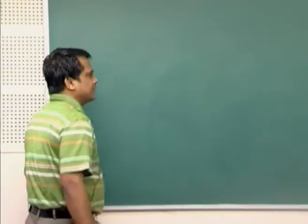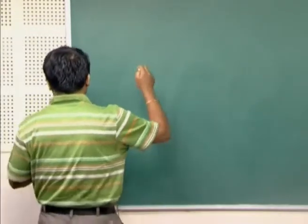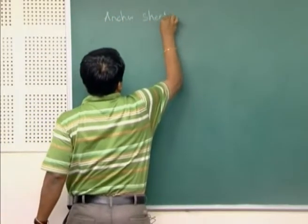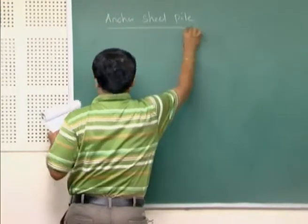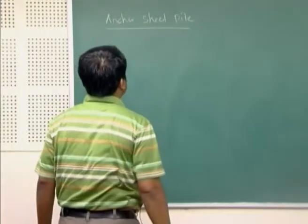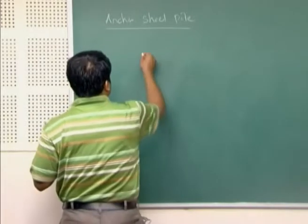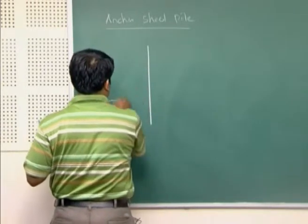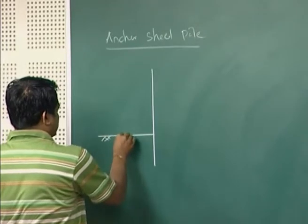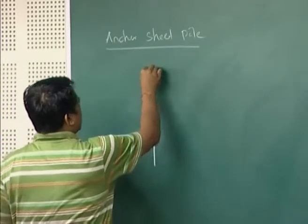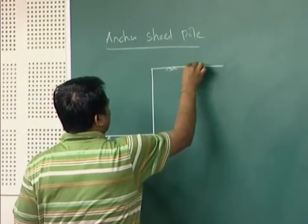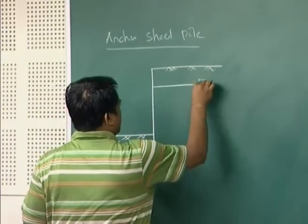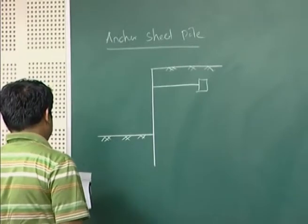Next part after cantilever sheet pile wall, let us start with anchor sheet pile. In anchor sheet pile, anchors have been provided in the sheet pile so that deflection as well as bending moment will be reduced.